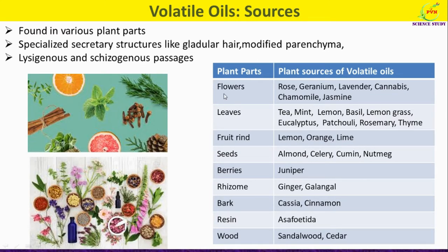Volatile oils are also produced from the leaves of plants such as tea, mint, lemon basil, lemongrass, eucalyptus, patchouli, rosemary, and thyme.